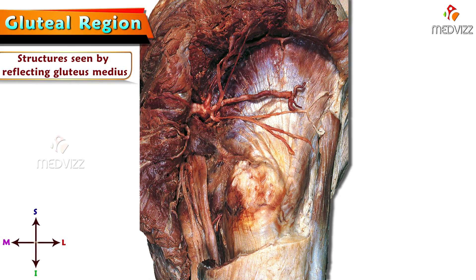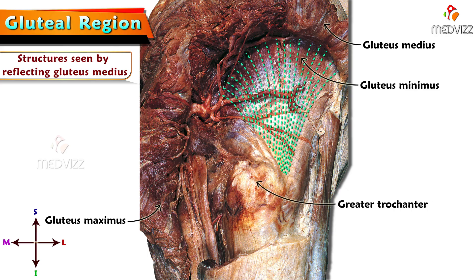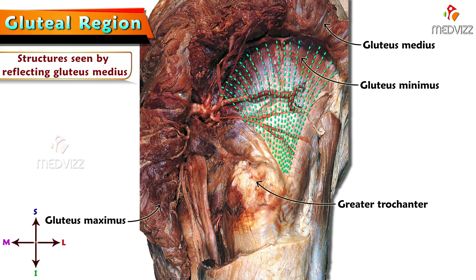Let's do further dissection by reflecting the gluteus medius muscle. In this image we can appreciate the reflected gluteus medius and also the reflected part of gluteus maximus. The fan-shaped muscle seen deep to gluteus medius is gluteus minimus, which converges towards and is attached to the greater trochanter.